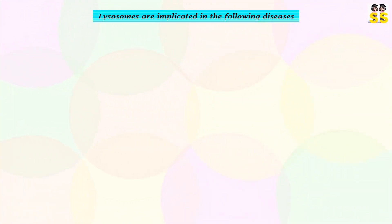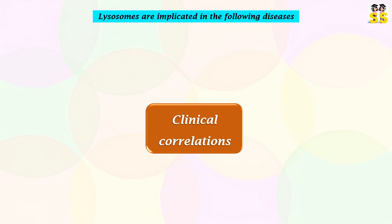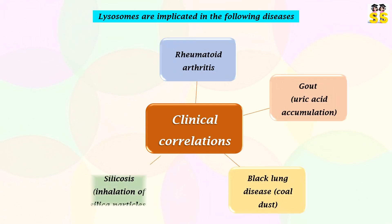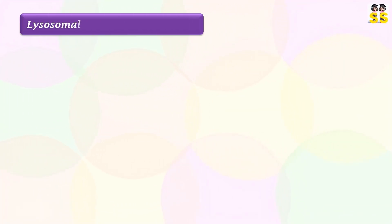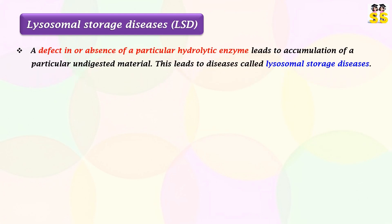Lysosomes are implicated in various diseases. Lysosomal changes and dysfunction have been correlated with the development of numerous diseases, such as rheumatoid arthritis, gout, black lung disease, silicosis, and asbestosis. Dysfunction of the lysosomes leads to lysosomal storage diseases. Any defect in or absence of a particular hydrolytic enzyme leads to accumulation of undigested material, resulting in lysosomal storage diseases.